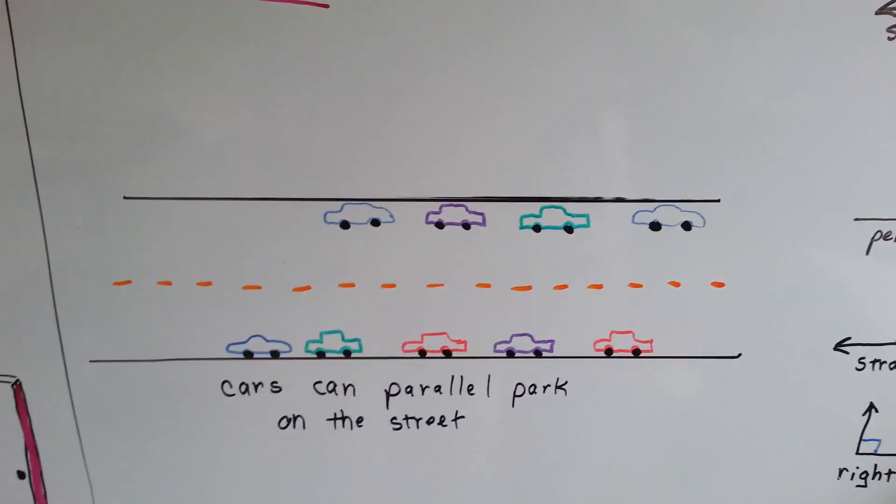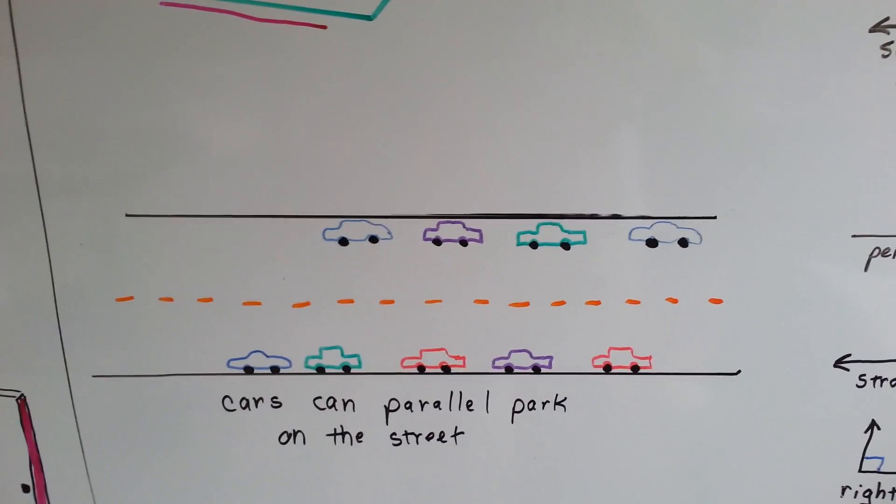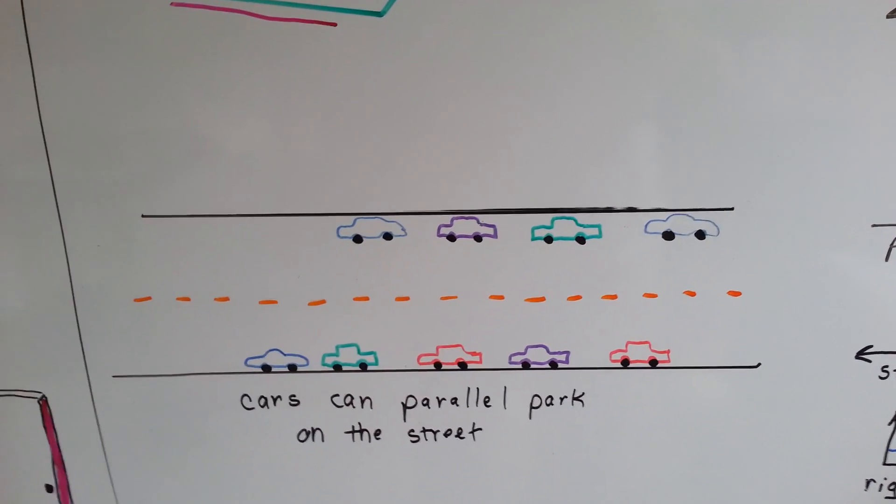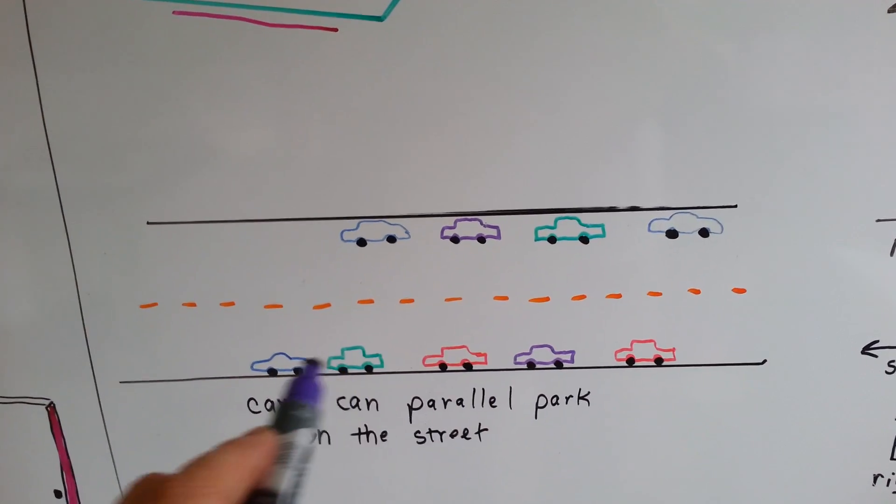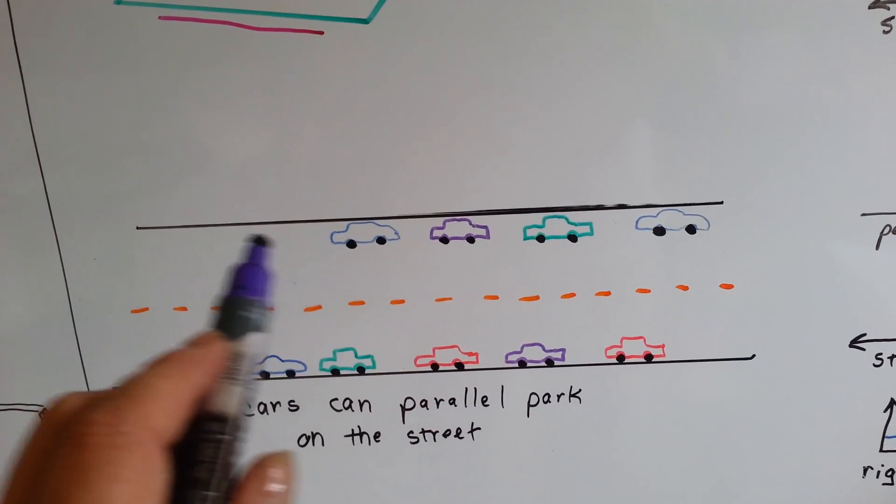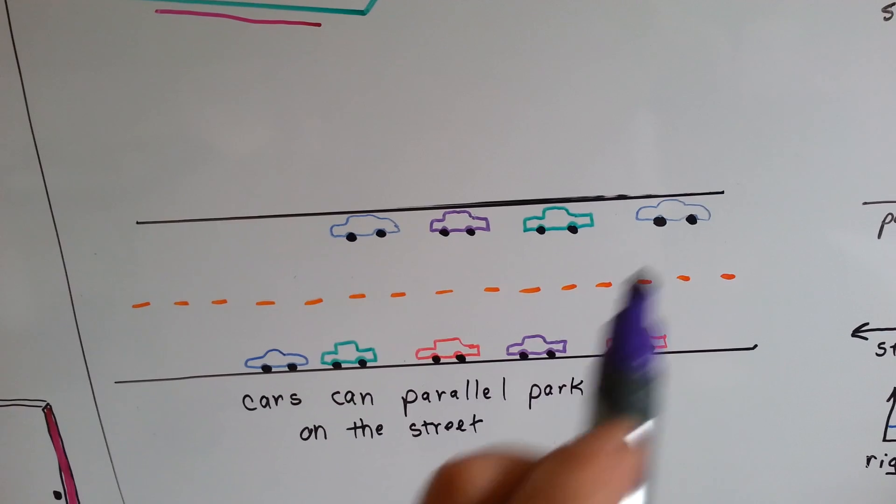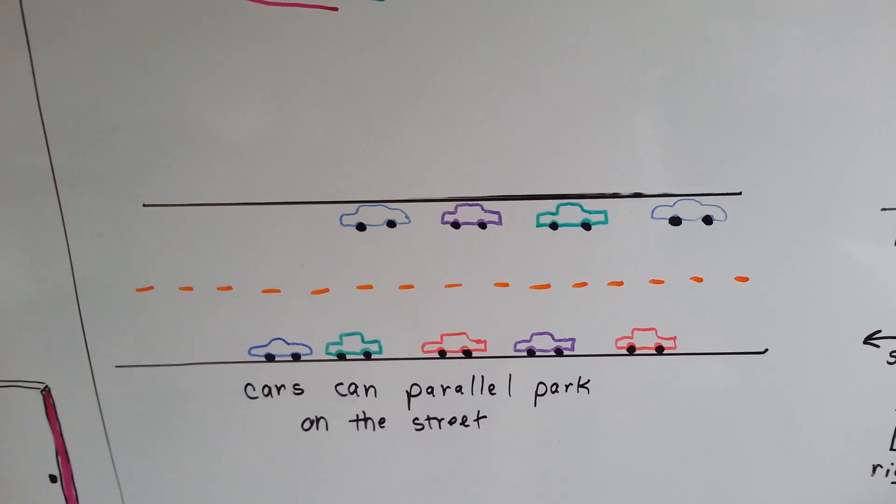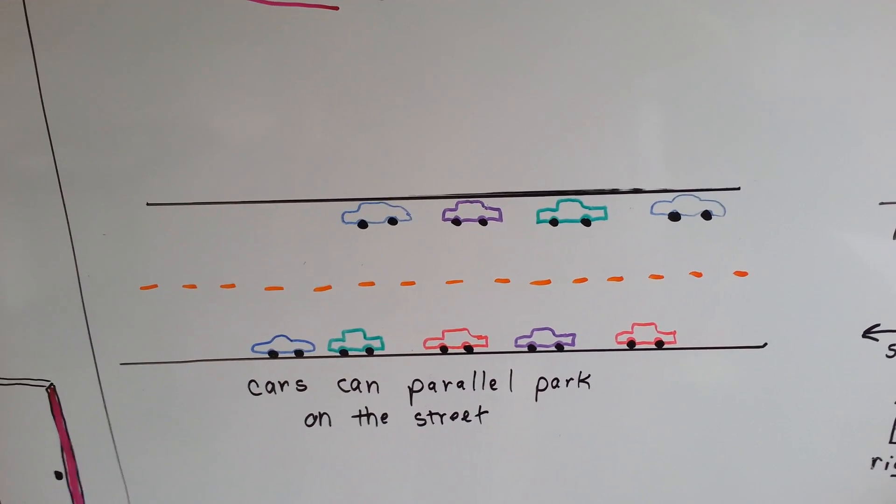Cars can parallel park on the street. You ever hear someone say, I have to parallel park? Well, it means they're going to park along the side of the street like that, and the rows of the cars are parallel to each other. The sides of the streets are parallel to each other. See that? That's parallel parking.